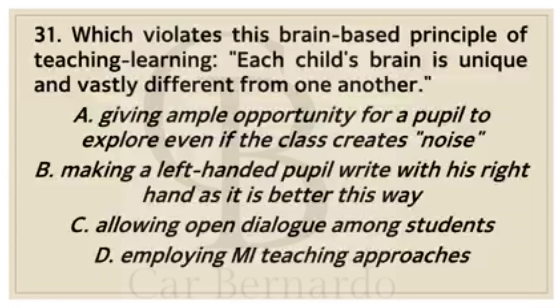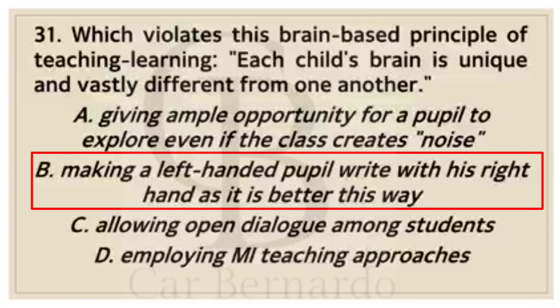Number thirty-one: Which violates this brain-based principle of teaching-learning: each child's brain is unique and vastly different from one another? Letter A: Giving ample opportunity for a pupil to explore even if the class creates noise. Letter B: Making a left-handed pupil write with his right hand as it is better this way. Letter C: Allowing open dialogue among students. Letter D: Employing MI teaching approaches. Answer: Letter B, Making a left-handed pupil write with his right hand.